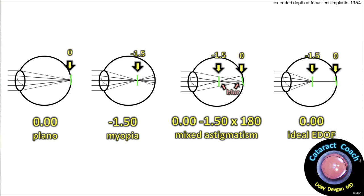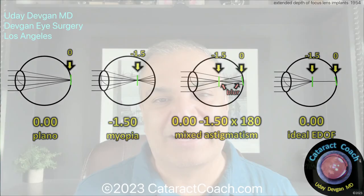Some patients have mixed astigmatism — a fraction of plano to minus 1.50 at a certain axis — and they pretty much go without glasses, but there's a compromise: they actually have two focal points in the eye depending on which meridian you're looking at. At one focal point they're focused at plano for far distance, and the other at minus 1.50 for intermediate. Image quality isn't great because of uncorrected astigmatism, but the upside is it gives a wider range. The ideal EDOF lens would give a really great range with no side effects — but that doesn't exist. So let's talk about what does.